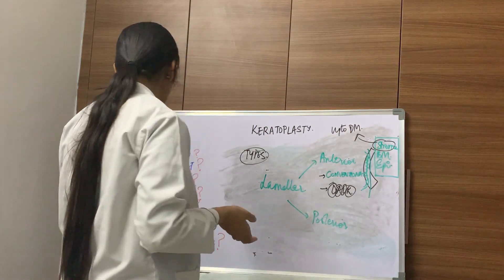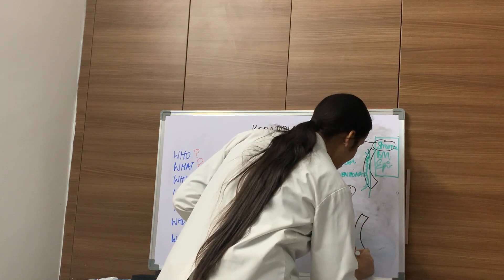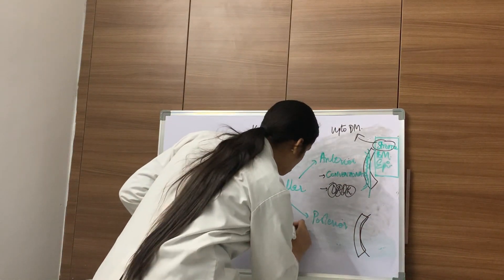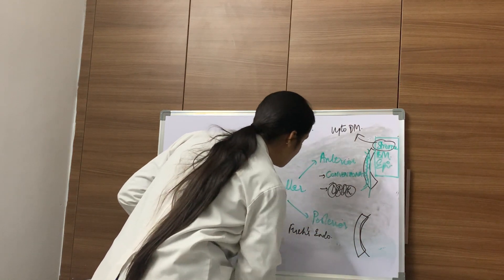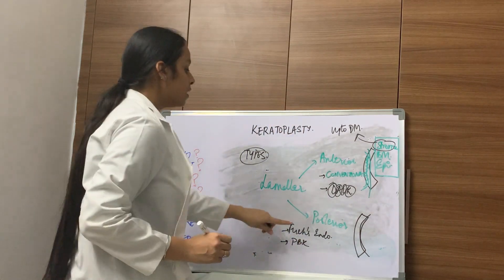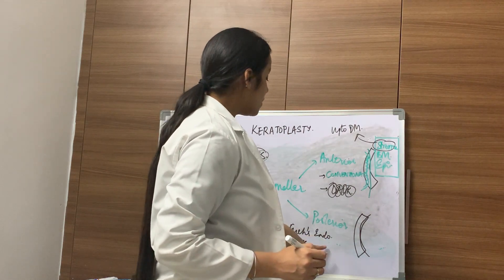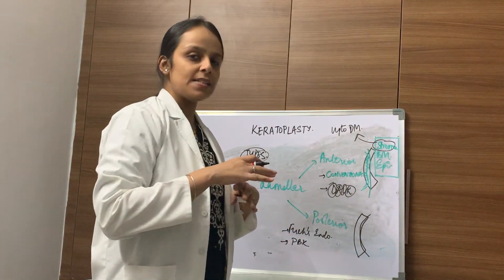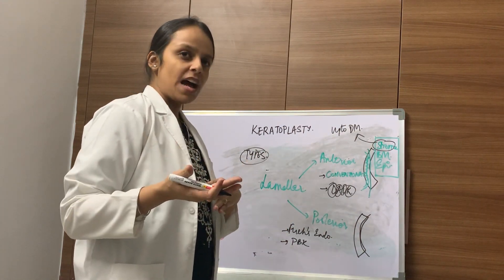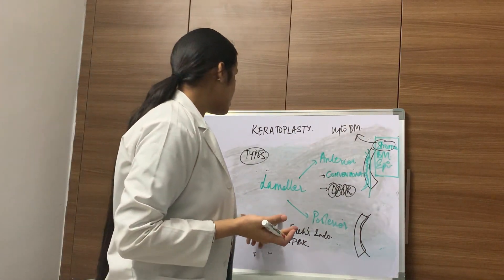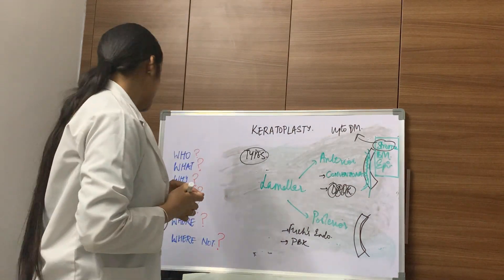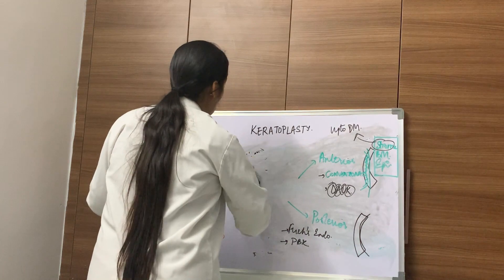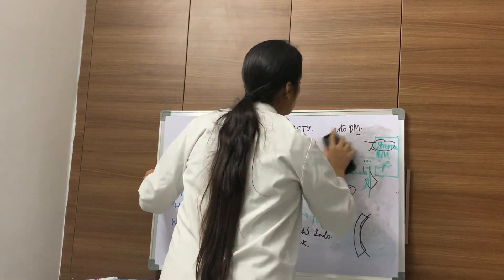In posterior lamellar keratoplasty, only the endothelium is transplanted. This is indicated when the endothelium is primarily diseased, as in Fuchs' endothelial dystrophy or pseudophakic bullous keratopathy. Since no surface sutures are placed, it is astigmatically very neutral and offers very fast visual recovery. However, it is also a technically challenging procedure that takes considerable expertise to master.